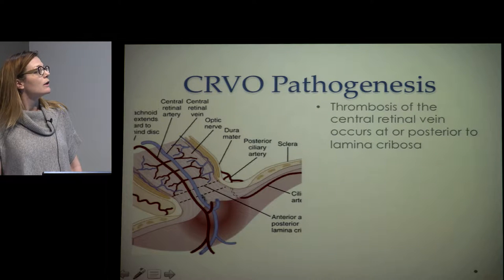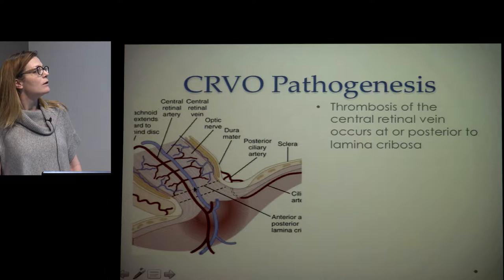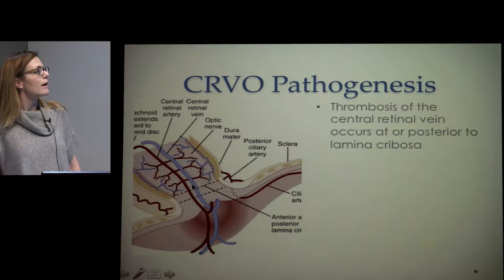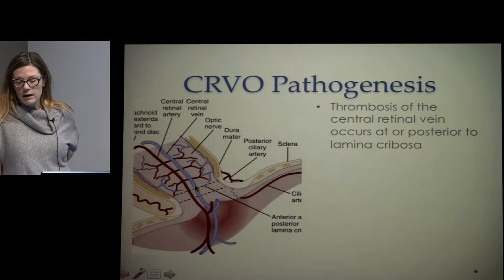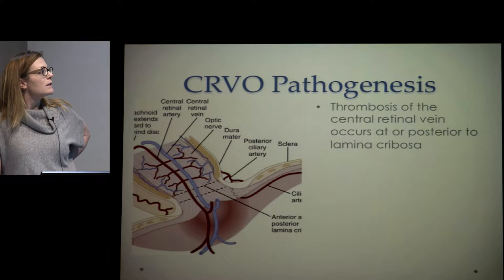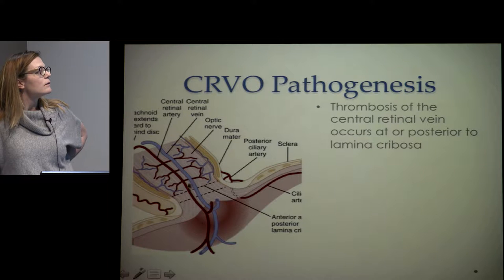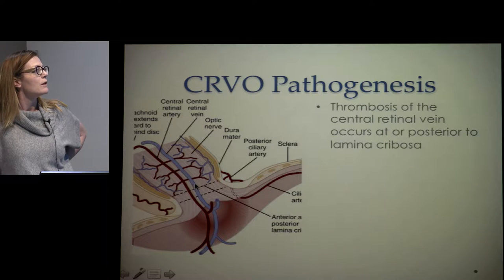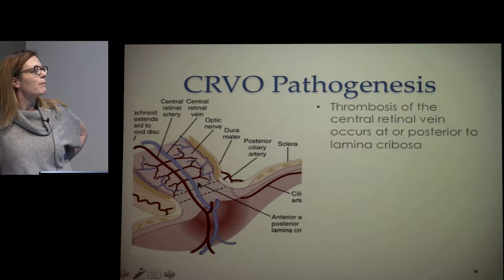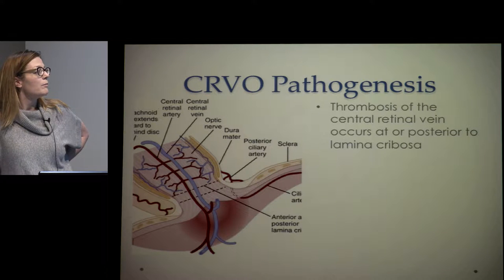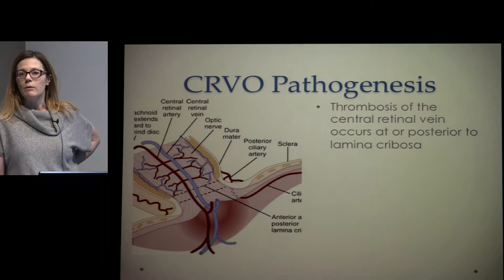Looking at the cross section of the optic nerve and vasculature, central retinal vein occlusion occurs from thrombosis of the central retinal vein at or posterior to the lamina cribrosa. A hemiretinal vein occlusion is an anatomic variation where the superior and inferior retinal veins meet posterior to the lamina cribrosa and one becomes occluded there. This anatomic variation occurs in about 20% of people and will spare a portion of the retinal vasculature.